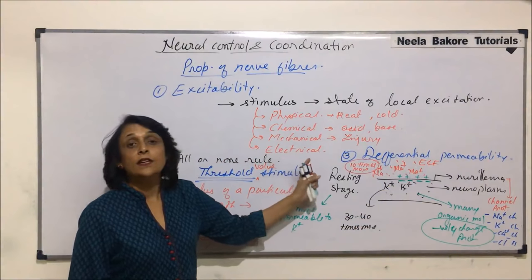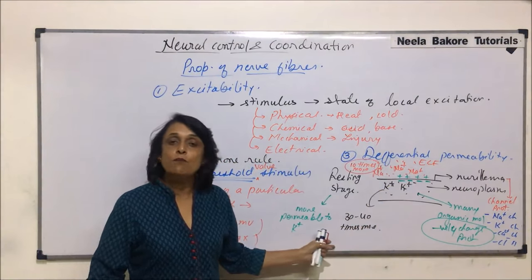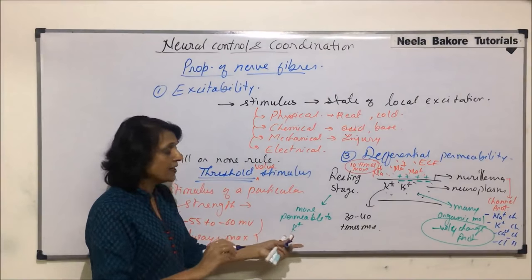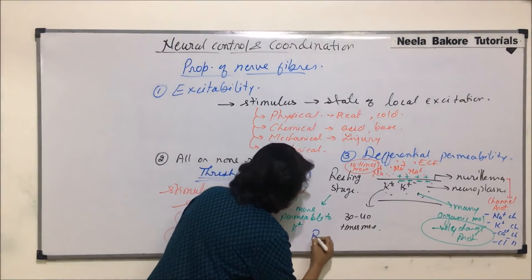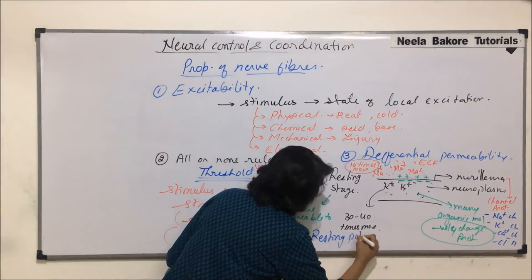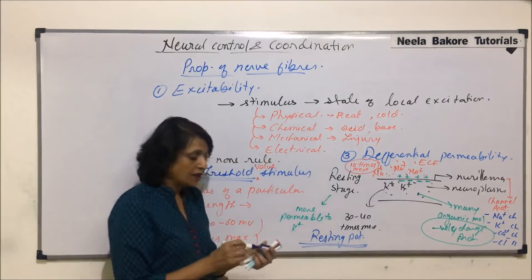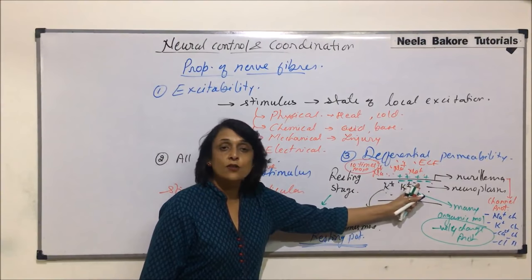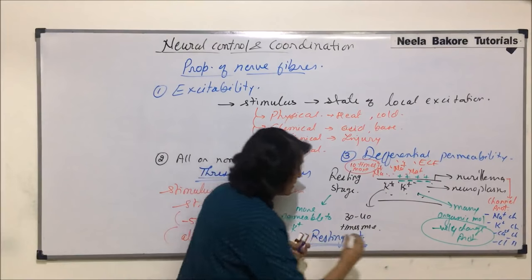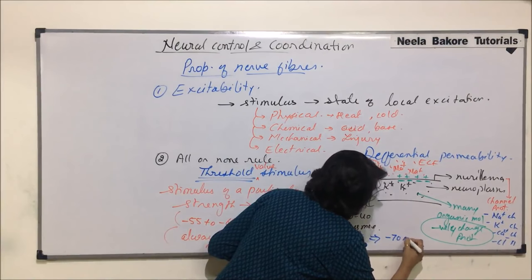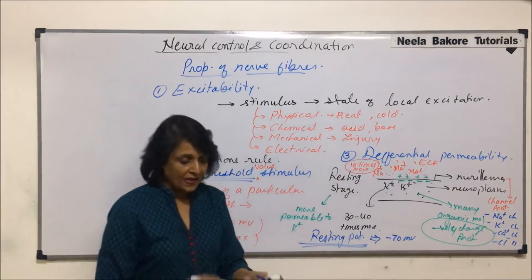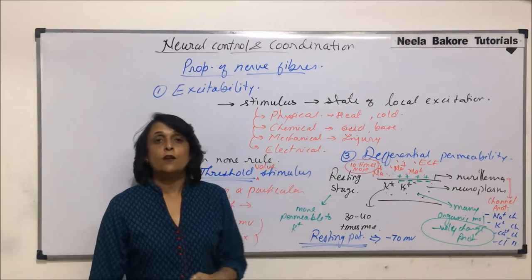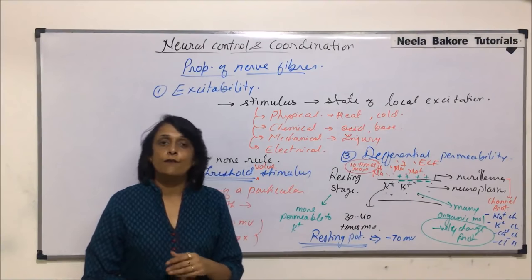Differential permeability plays a very important role in receiving stimuli and conduction. If a galvanometer is connected to measure potential difference — since the inner side is electronegative and outer is electropositive — the resting potential is minus 70 millivolts.